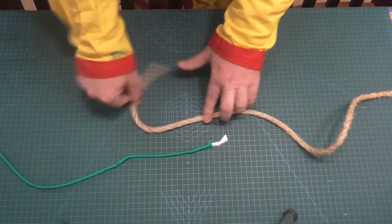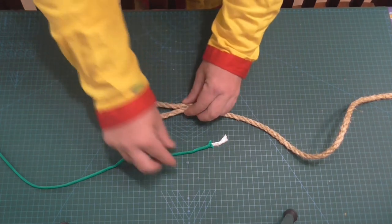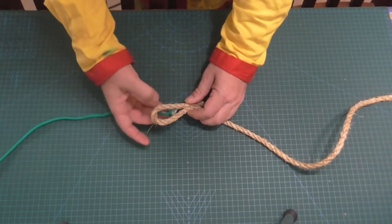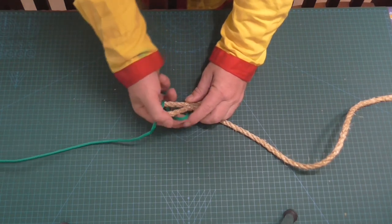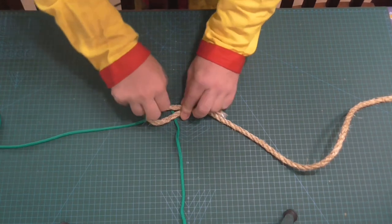Alrighty. So we have our main line. We're going to turn that into a loop as we've done in all the other variations of the sheet bend. We're going to take our narrower line. We're going to come up through and round the back of the knot.